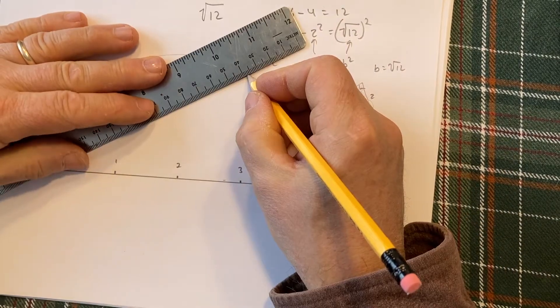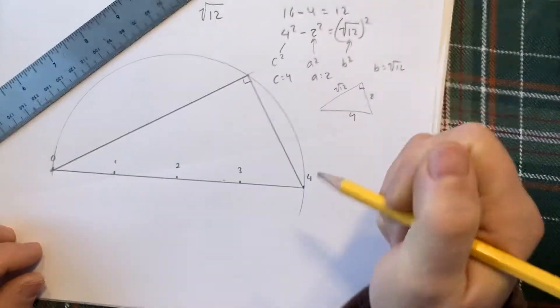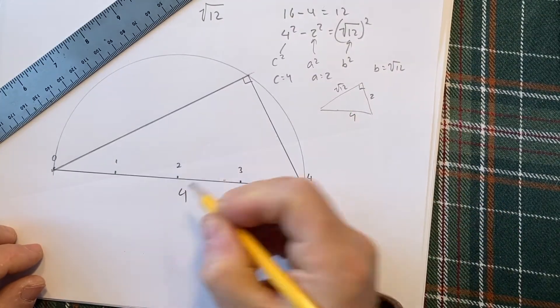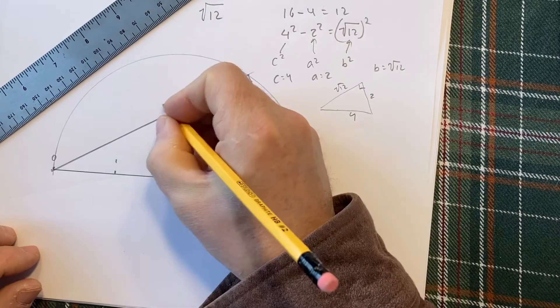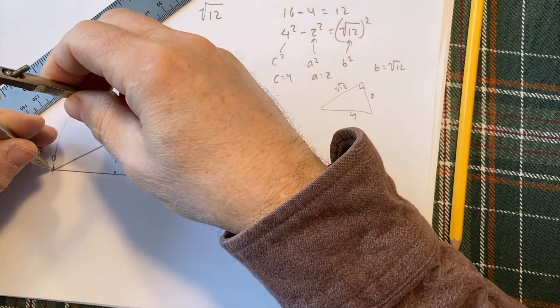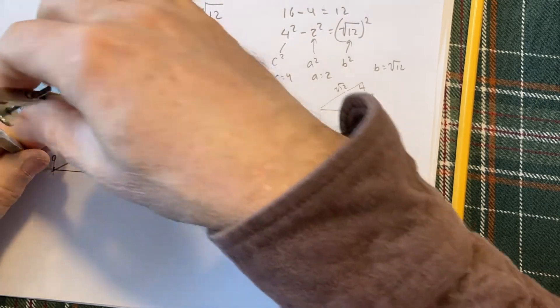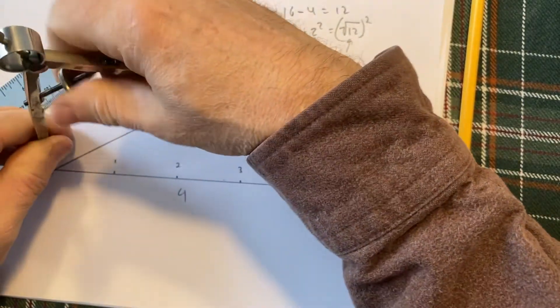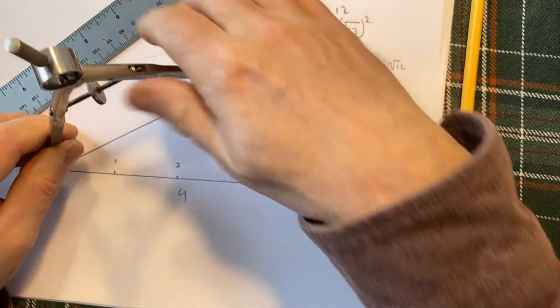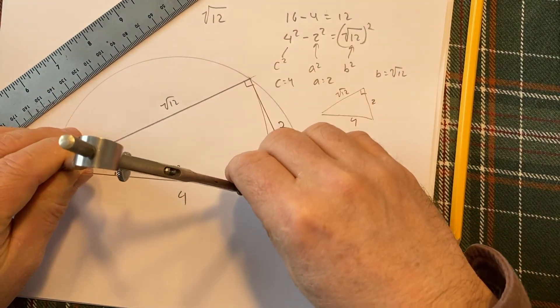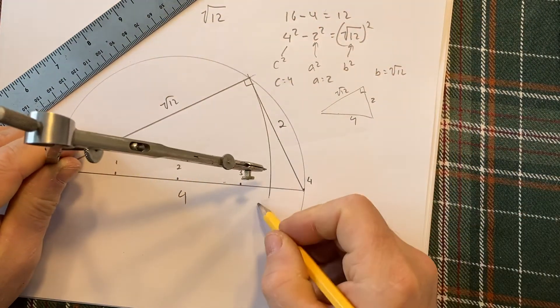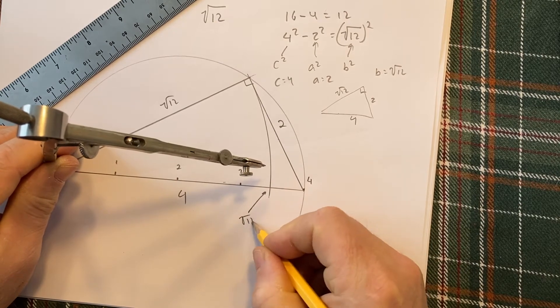This length has to be the square root of 12. This is a perfect square. This is my 4. This is my 2. So this must be root 12. Then take my compass, adjust it so the pencil length is root 12. And that's why we made it that long. And then make an arc down to your number line. This is going to be your square root of 12.